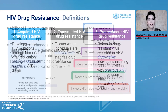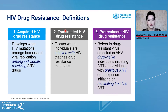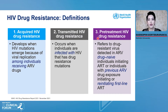The first one is acquired HIV drug resistance — it develops when HIV mutations emerge because of viral replication among individuals receiving antiretroviral drugs. The second definition is transmitted HIV drug resistance — it occurs when individuals are infected with HIV that has drug-resistant mutations. This definition is difficult to determine and not popular to study.